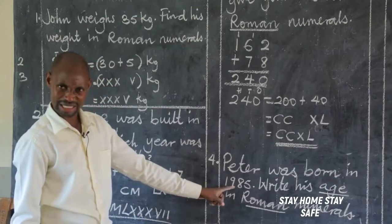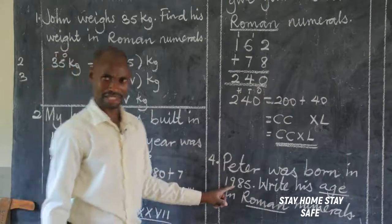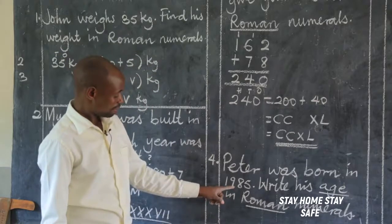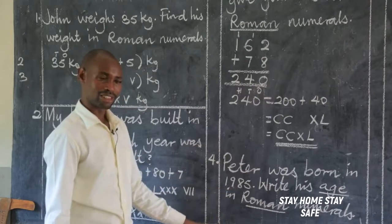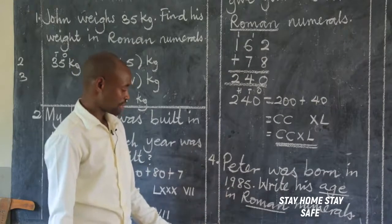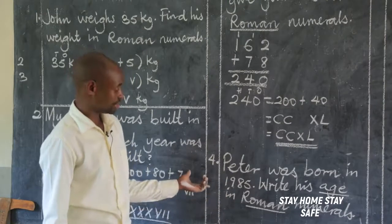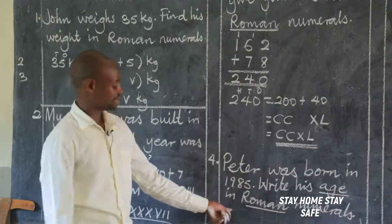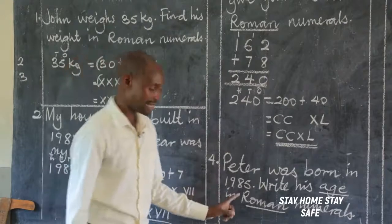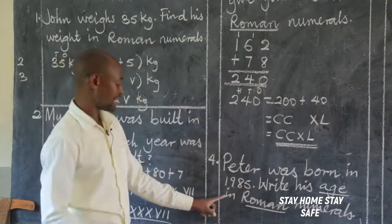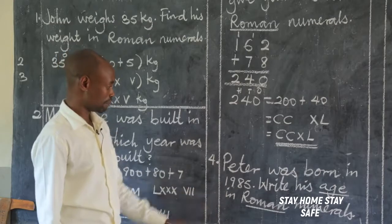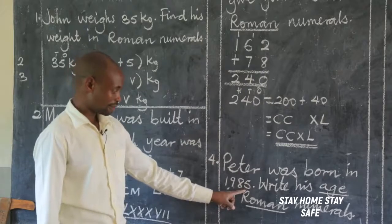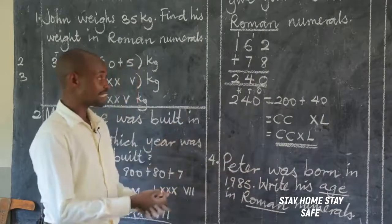Is 1985 his age? If you were born in 2000, does it mean you are 2000 years old? No. How do we calculate someone's age? You get the current year minus the year you were born. So to get Peter's age, we need the current year minus 1985.